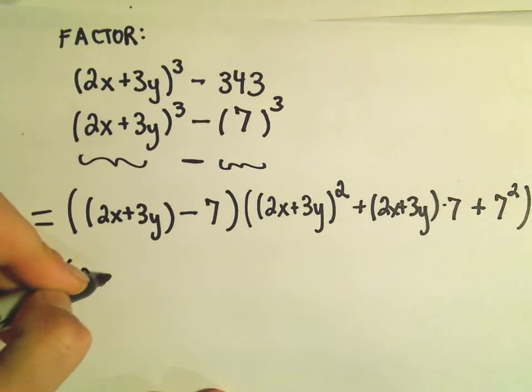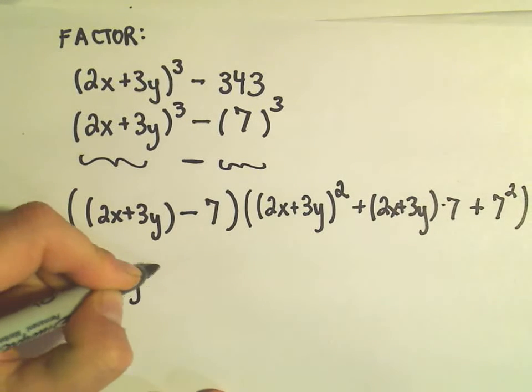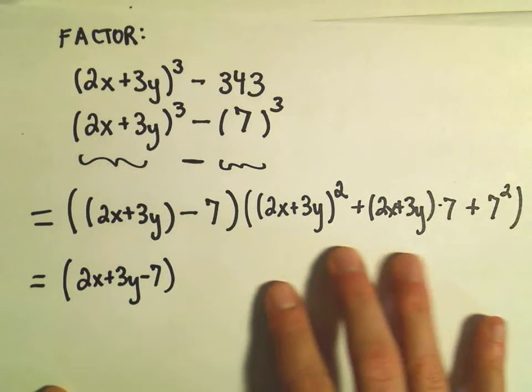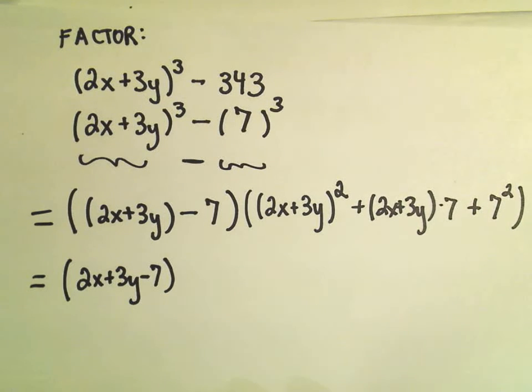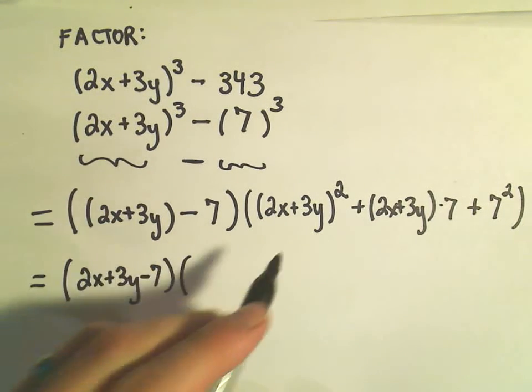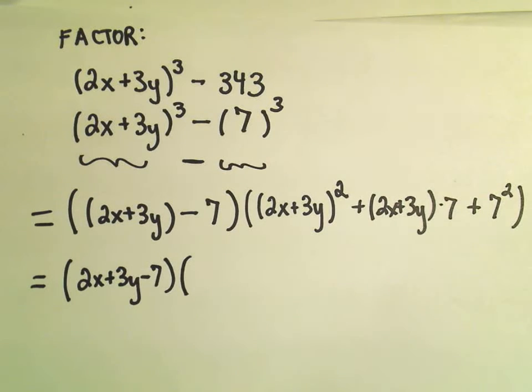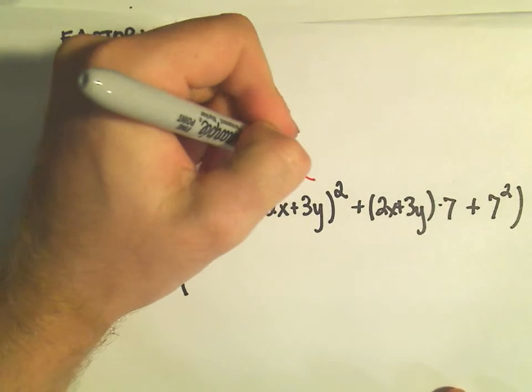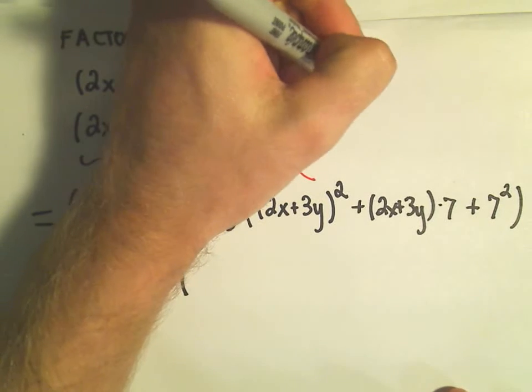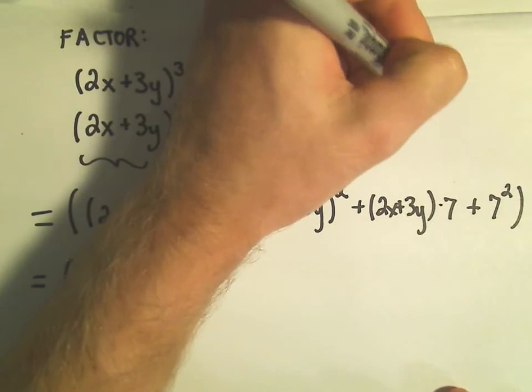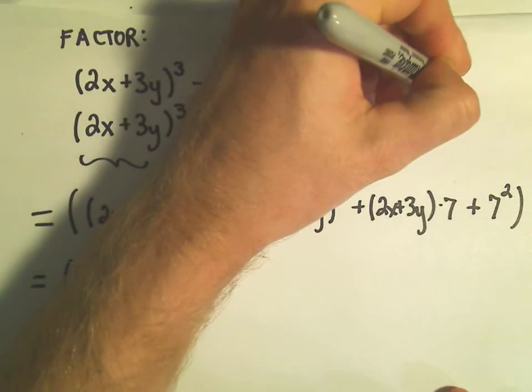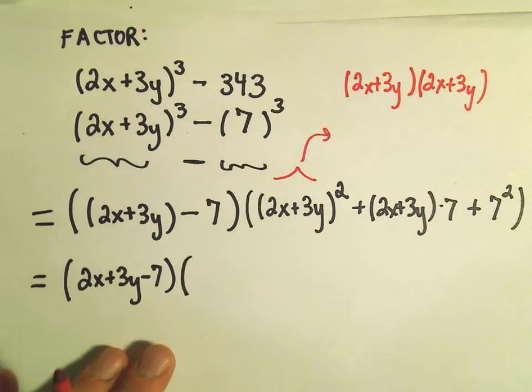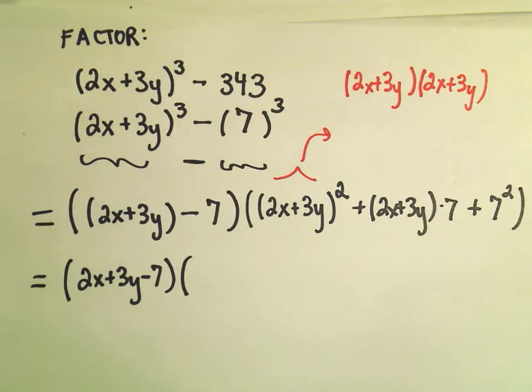So we could write this as 2x plus 3y minus 7. If you wanted to, you could always multiply all this stuff out. We would have to do 2x plus 3y times 2x plus 3y. Let me do this part off to the side. We would have to FOIL this out, distribute it out.